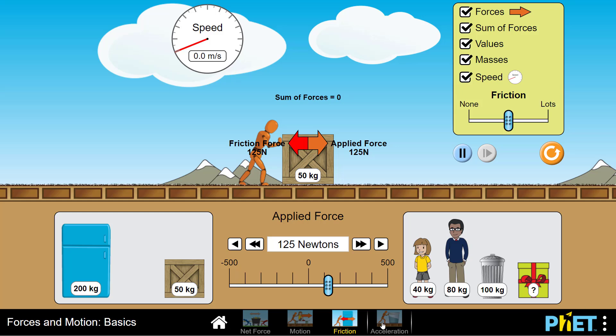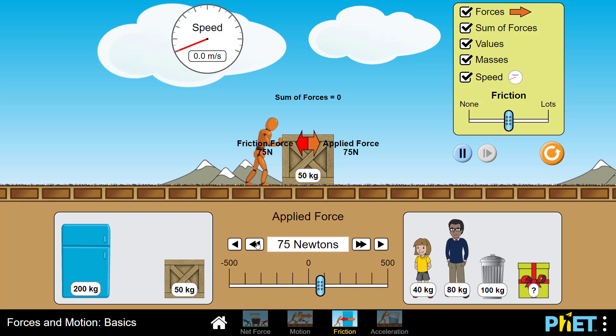Notice that the static friction force is scalable. For example, if I decrease my applied force to 75 Newtons, the static friction force shrinks to 75 Newtons. If I increase it to 125 Newtons, the static friction force keeps pace. Let me say that again. Static friction scales to be whatever it needs to be to keep the object at rest.